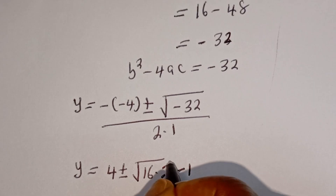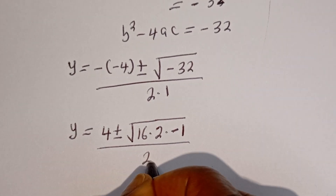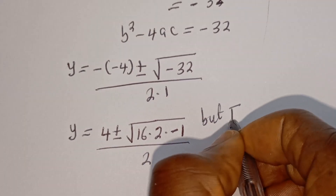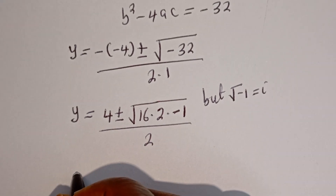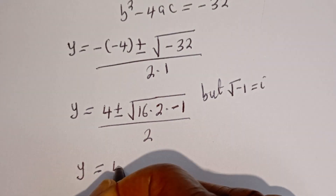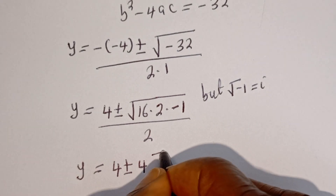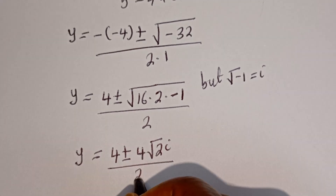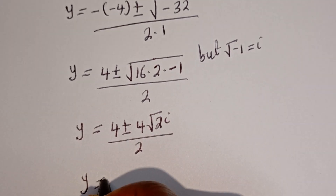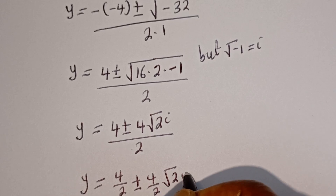The square root of minus 32 can be written as square root of 16 times 2 times minus 1. We know that square root of minus 1 equals i. So y equals 4 plus or minus 4 root 2 i, divided by 2.